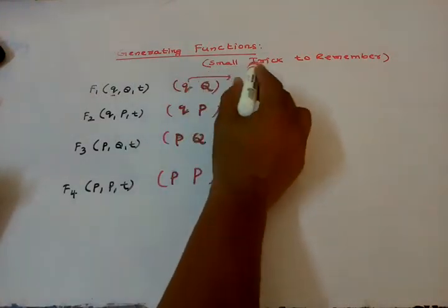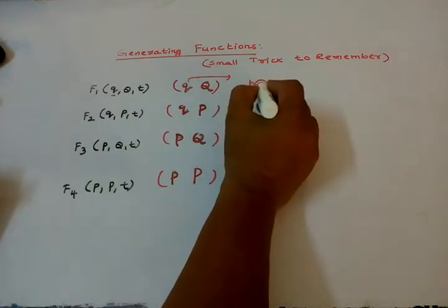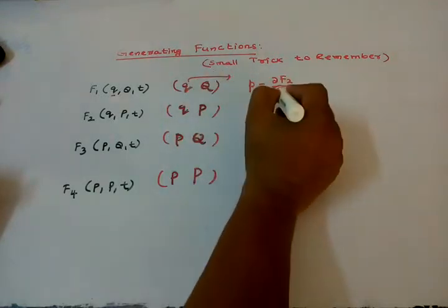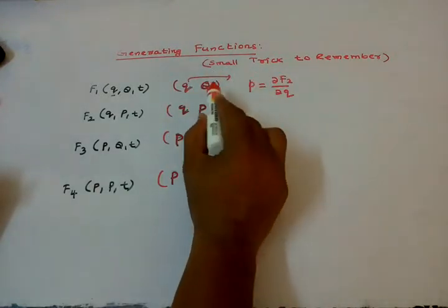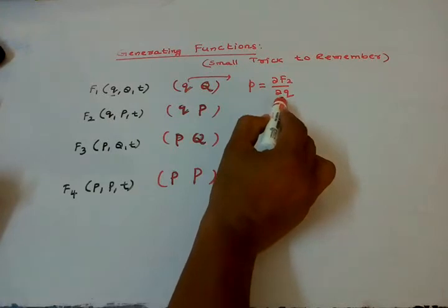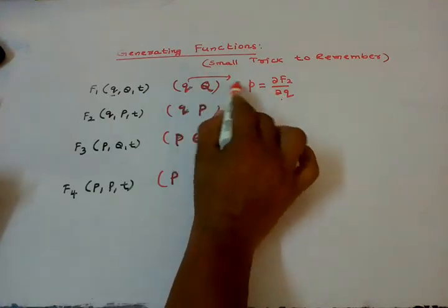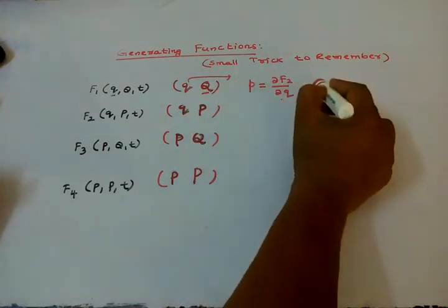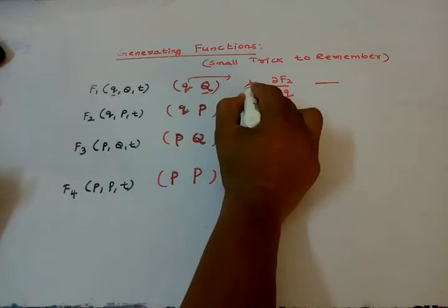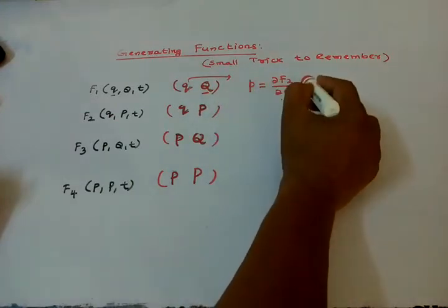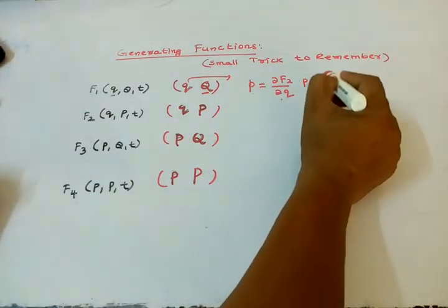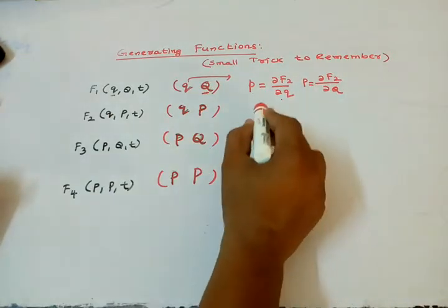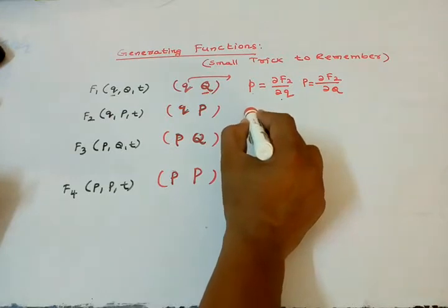For F2, the equation will be: small p equals ∂F2/∂q — here small q goes to the denominator. The second equation for F2 is: capital P equals ∂F2/∂Q — capital Q goes to the denominator.